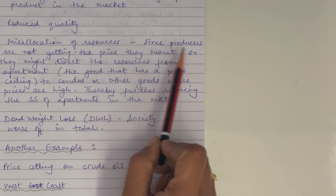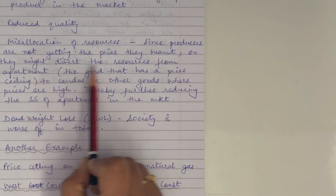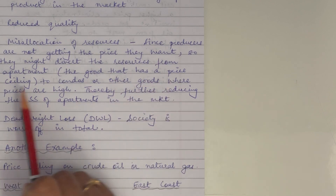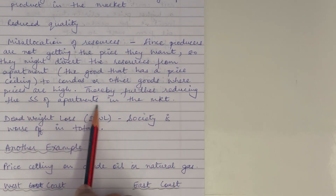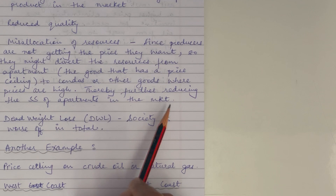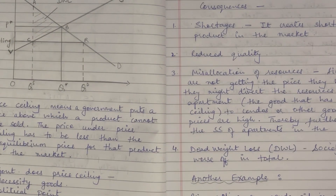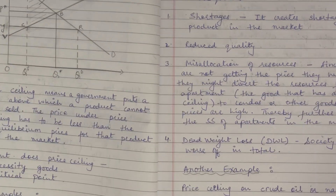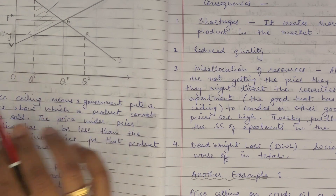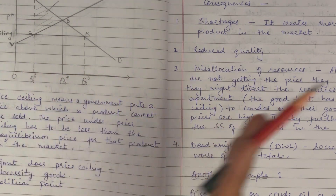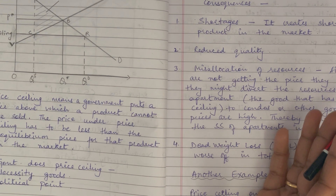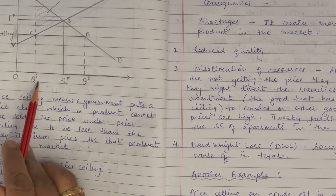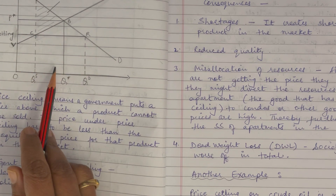The third consequence is misallocation of resources. Since producers are not getting the price they want, they might divert resources away from apartments — the good with a price ceiling — to condos or other goods where prices are high, further reducing the supply of apartments in the market. This damages the whole purpose for which the price ceiling was done, as resources shift to other types of accommodation where there is no price capping.